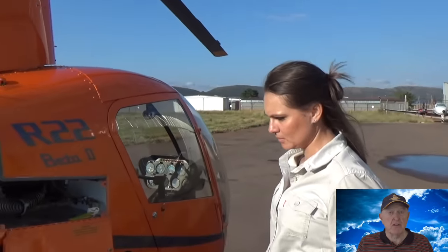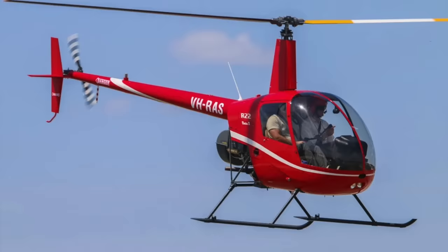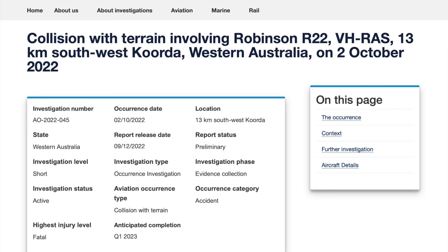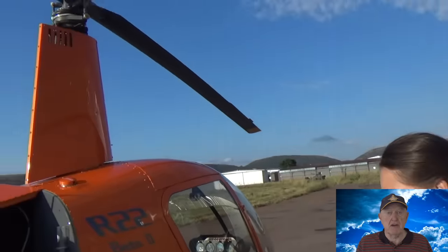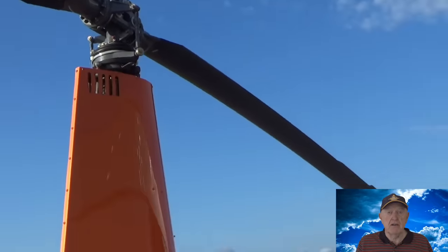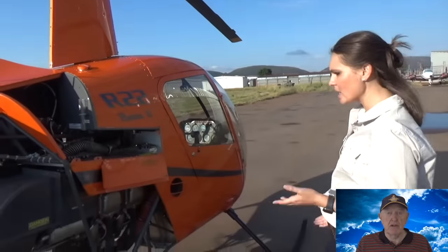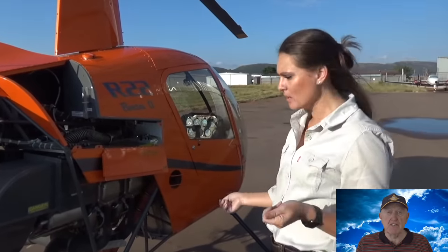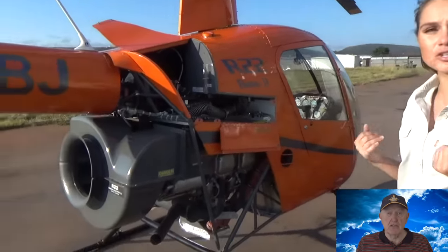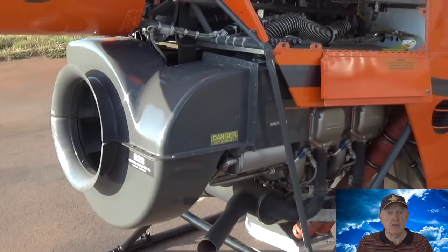Recently we lost two good friends in a Robinson R-22 Beta crash. This helicopter was cruising at 1700 feet AGL when it ascended 100 feet abruptly followed by a rapid descent of 100 feet per second. This indicates a negative g pushover notorious for inducing a rotor bump.